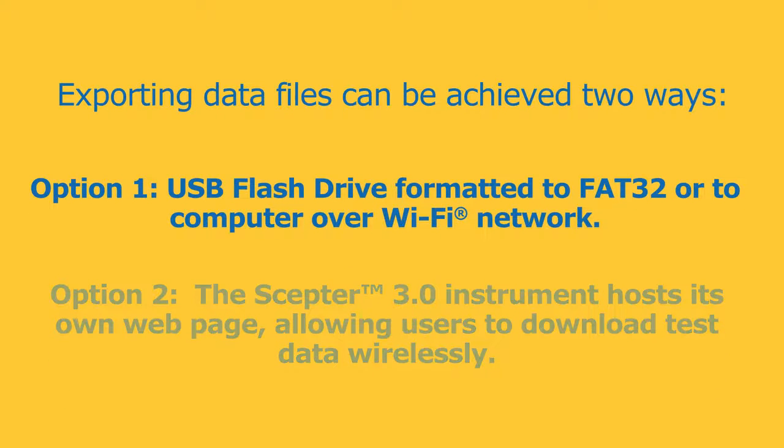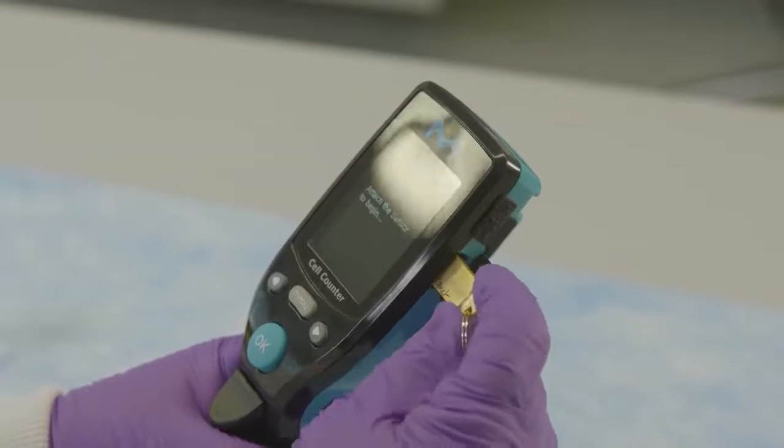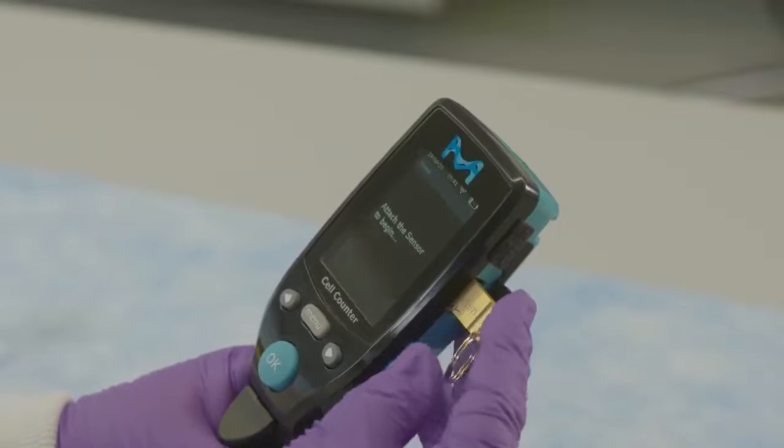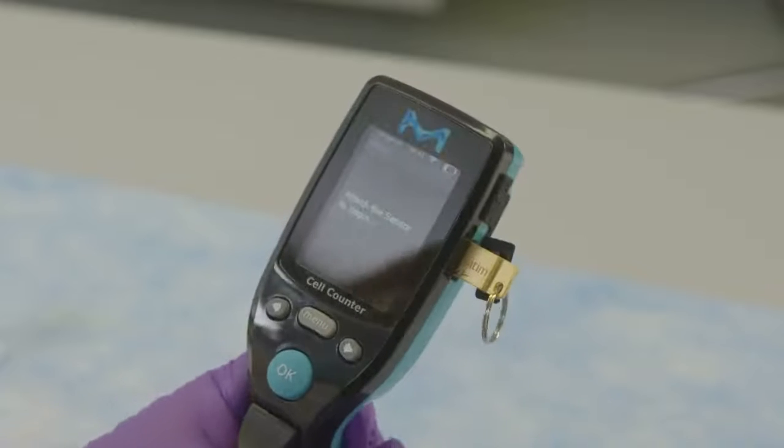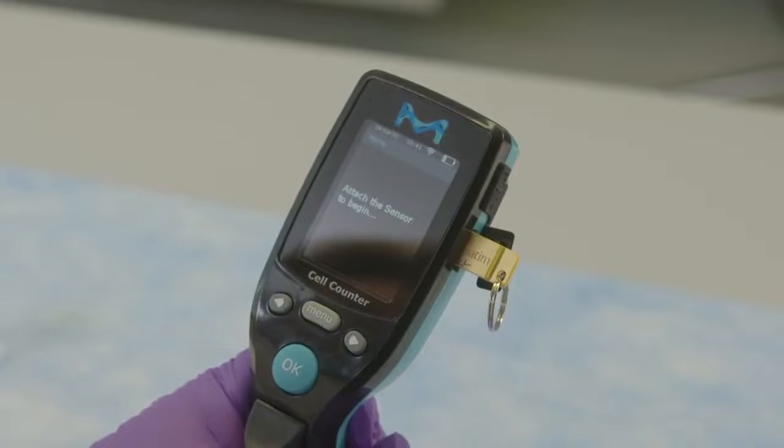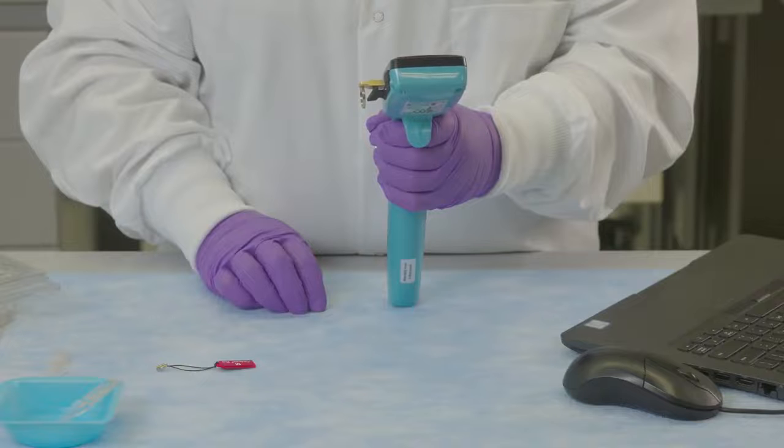The first is to use a USB flash drive that is formatted to FAT32, or to a computer over a Wi-Fi network. Insert the USB flash drive in the SEPTOR 3.0 USB port.